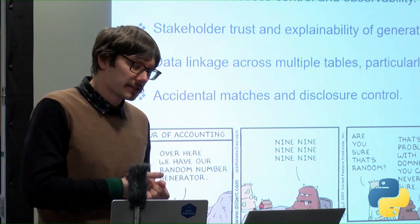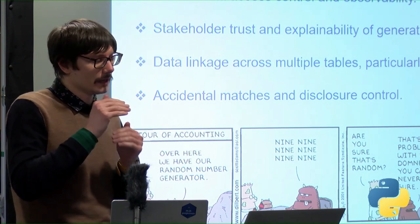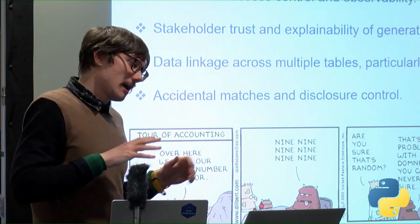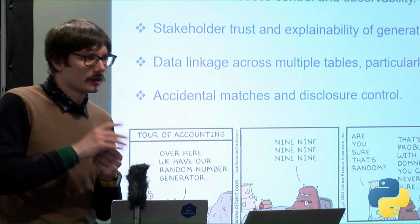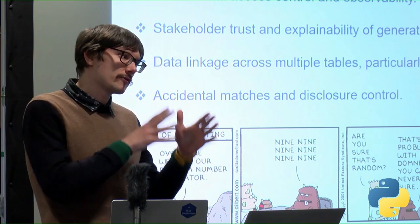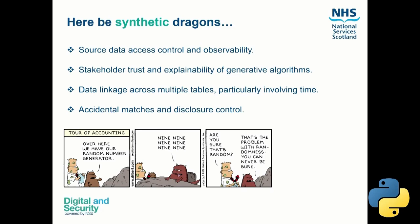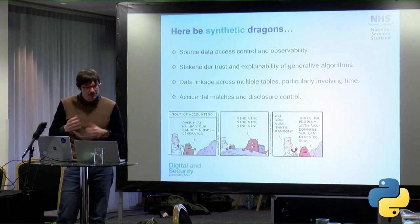Data linkage across multiple tables, particularly involving time, is very challenging, as is preserving row-level relationships. For example, if you have a hospital stay consisting of multiple episodes, you want to preserve that relationship in your synthetic data, and it's not straightforward to do — it's much easier to preserve column-by-column relationships than row relationships. With multiple tables, the challenge is avoiding scenarios like patients who have passed away in one table appearing as new admissions in another. Some tools like SDB will join those tables and then disaggregate them.